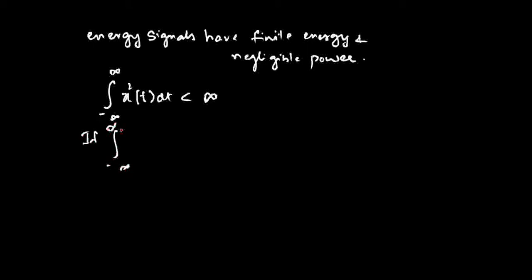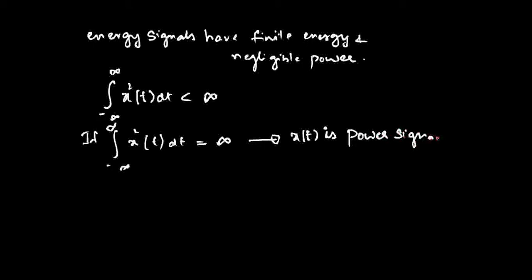If the energy integral from minus infinity to infinity of x²(t) dt is equal to infinity, then x(t) is called a power signal. So a power signal has infinite energy. Please note that energy signals have negligible power and finite energy, while power signals have infinite energy.